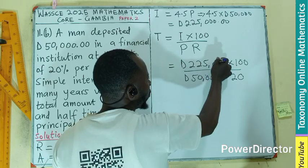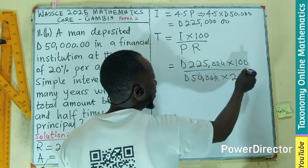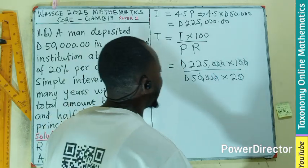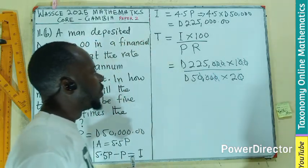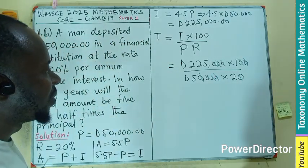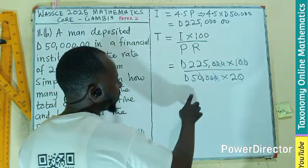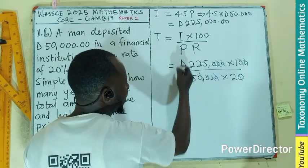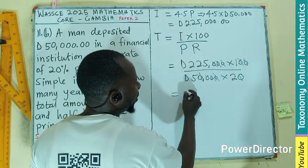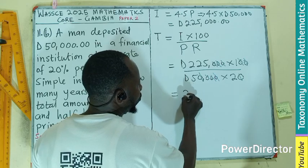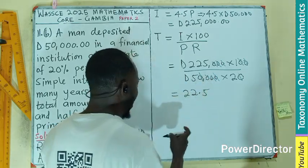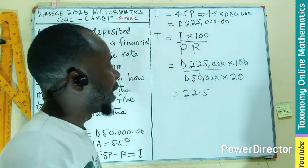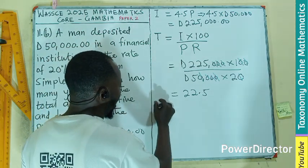After cancelling the zeros, we get 22.5 divided by 1, which gives us 22.5. So the time is 22.5 years.